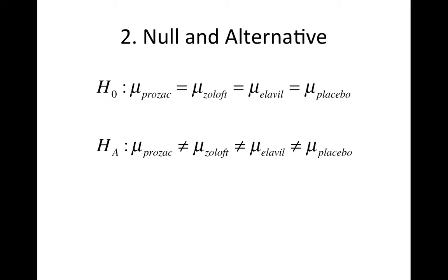Now, our null and alternative hypothesis. If we generalize from a two-sample t-test, for example, we might think that the null hypothesis could be stated the mean of the Prozac group is equal to the mean of the Zoloft is equal to the mean of the Elavil and the mean of the placebo. And our alternative would be that they're not equal.